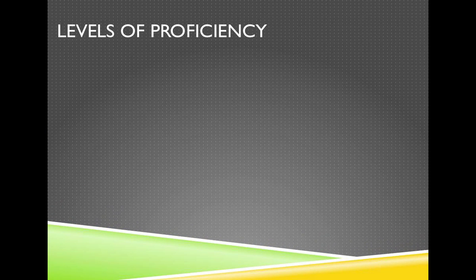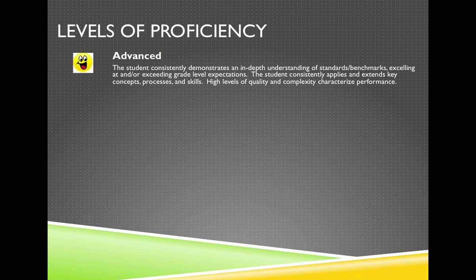When assessing a standard, teachers will give students feedback that tells them where they are in their learning. This feedback will be described as levels of proficiency, and we have four of them. First, Advanced: the student consistently demonstrates an in-depth understanding of standards and benchmarks, excelling at or exceeding grade level expectations. The student consistently applies and extends key concepts, processes, and skills. High levels of quality and complexity characterize performance — clearly going beyond what we would expect a student to have at a certain grade level at a certain point in time.